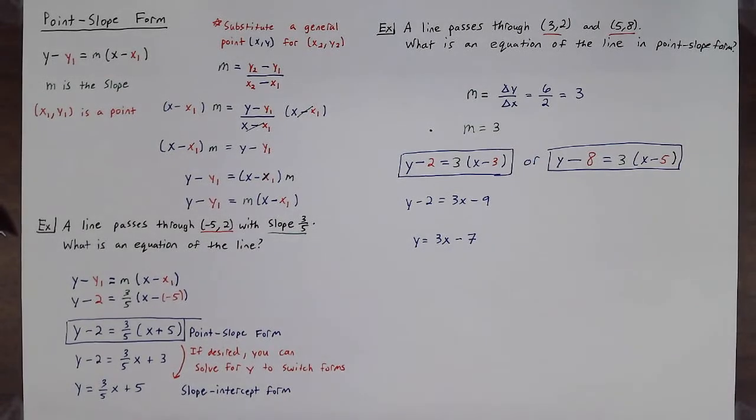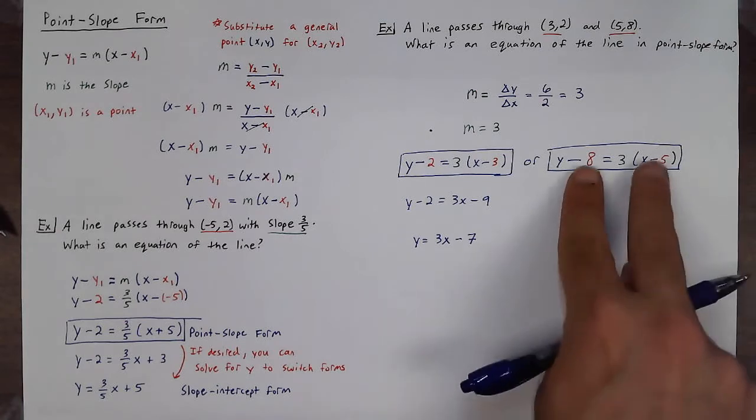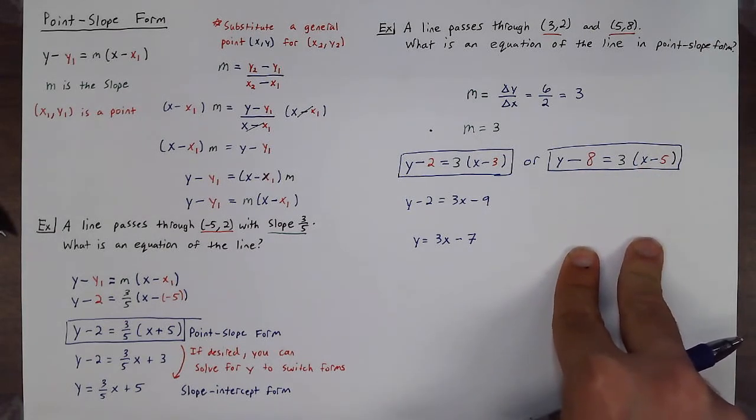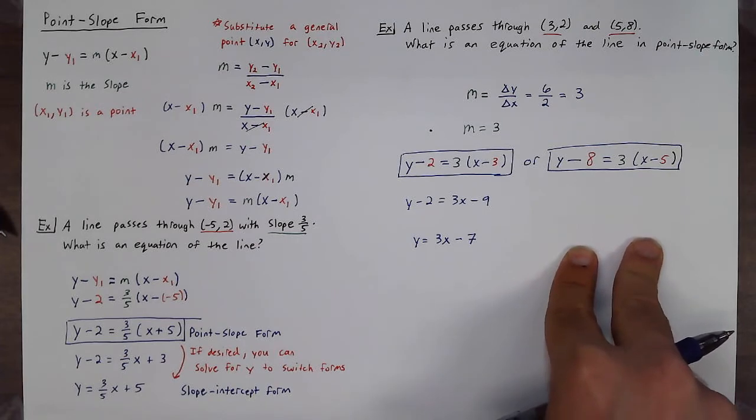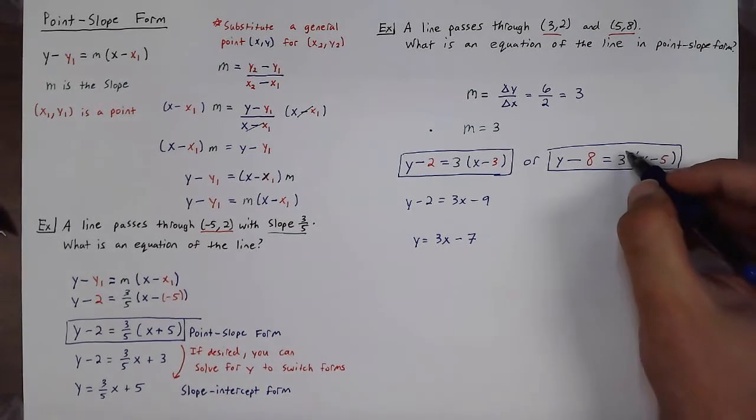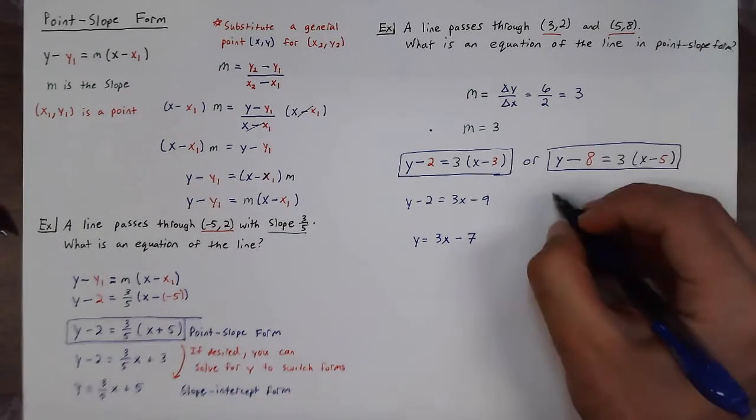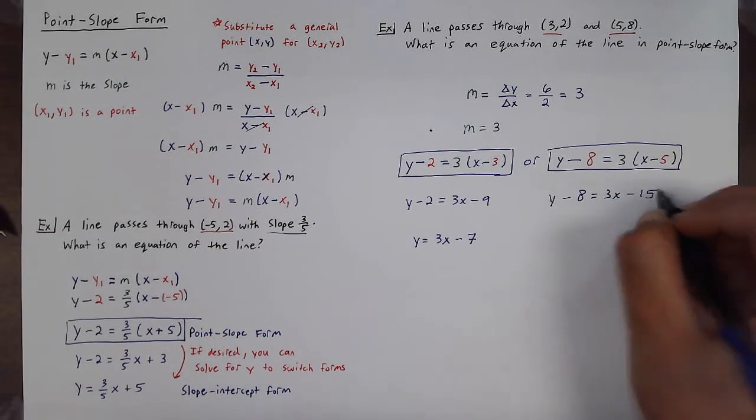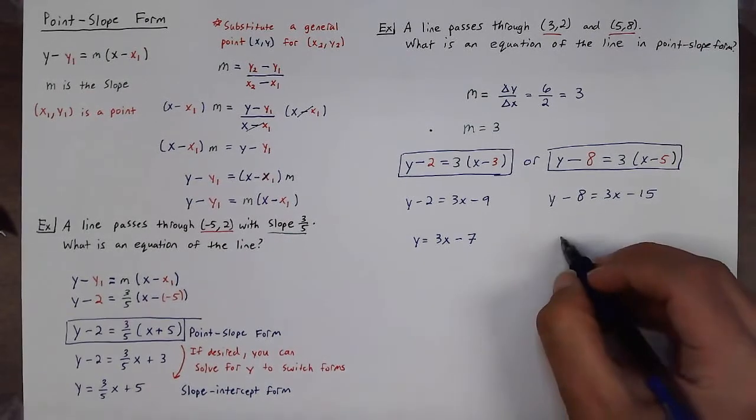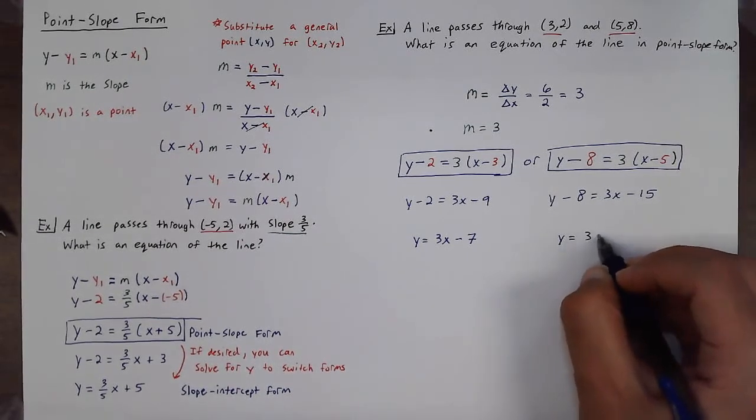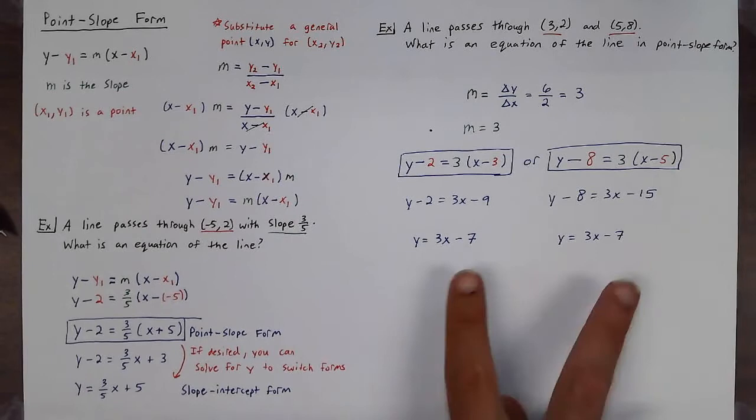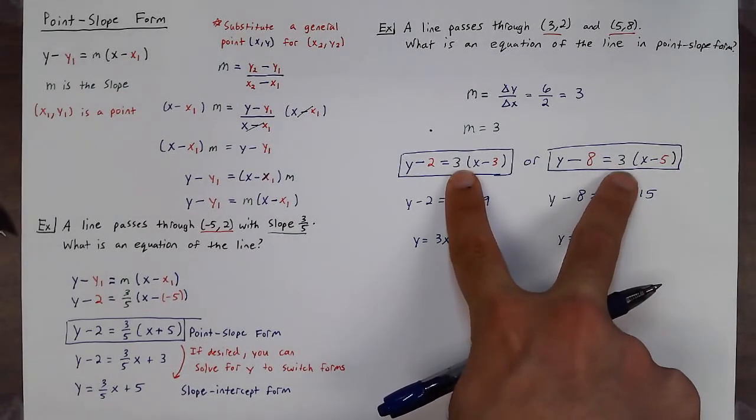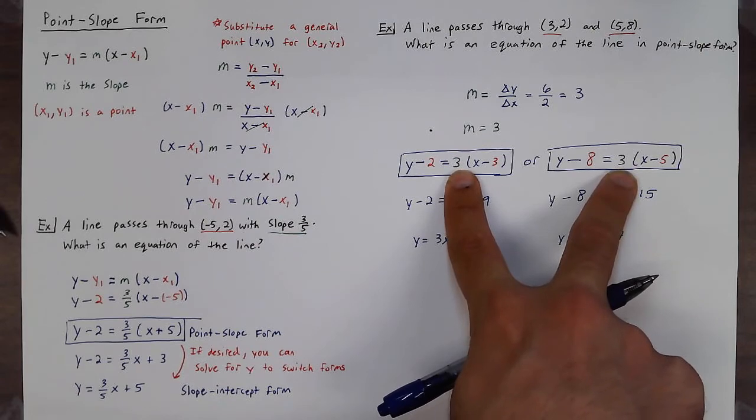If my assumption is correct when I solve the right equation for y and put it in slope-intercept form it should be y equals three x minus seven. I'll start by distributing the three. Give me y minus eight is equal to three x minus fifteen. I'll add eight to each side, give me y is equal to three x minus seven. Just to further prove that even though both of these point-slope forms of the line look different, they both represent the same line.